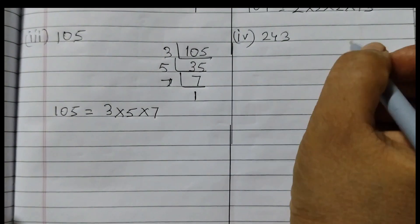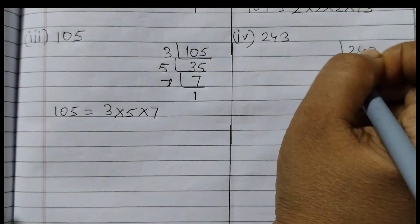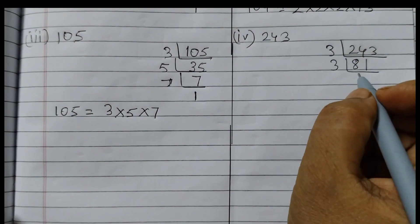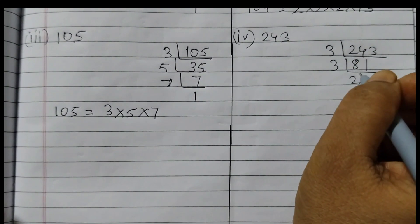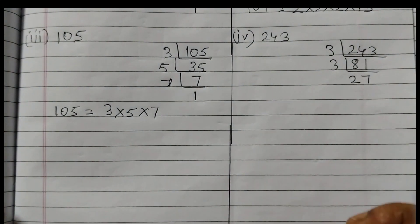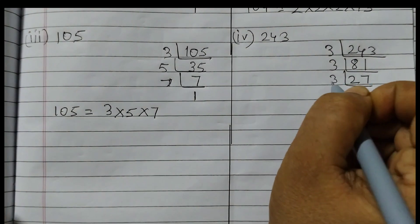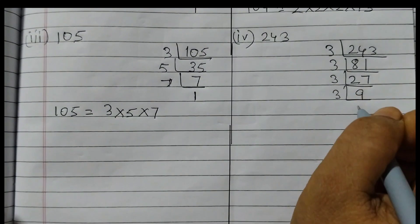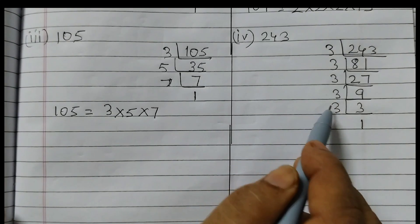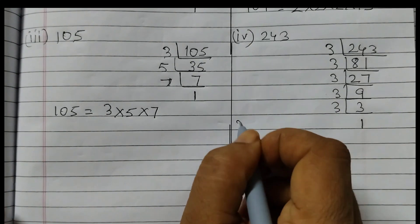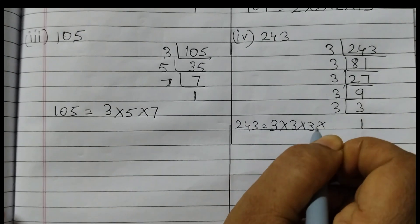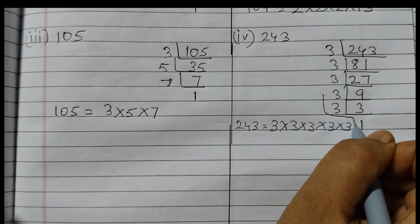Next is 243. First divide by 3. We keep dividing by 3: 243 ÷ 3 = 81, 81 ÷ 3 = 27, 27 ÷ 3 = 9, 9 ÷ 3 = 3, 3 ÷ 3 = 1. You should be good with your tables, otherwise it will be difficult for you to divide. So 243 can be written as 3 × 3 × 3 × 3 × 3, that is 3 five times.